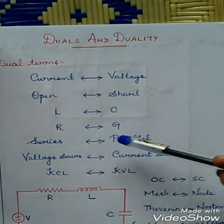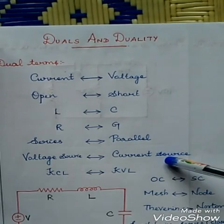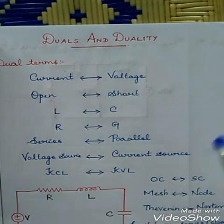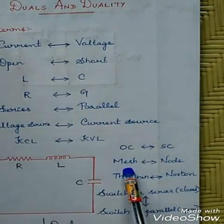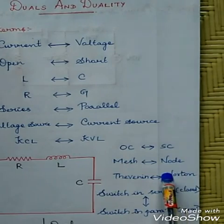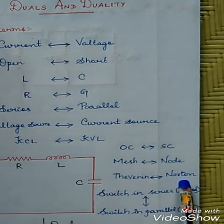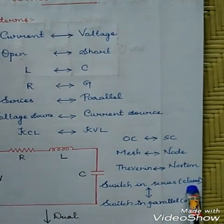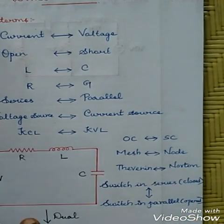If it is a series circuit, we need to convert it into parallel. If it is a voltage source, it has to be converted to a current source. KCL's dual term is KVL. If it is open circuit, we need to convert it into short circuit. If it is a mesh, the equivalent dual term is node. Thevenin is the dual theorem of Norton's theorem. If it is a closed switch in series, we need to convert it into a parallel switch which is open.